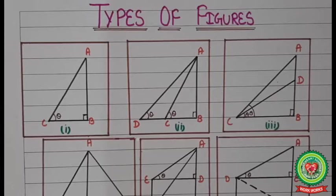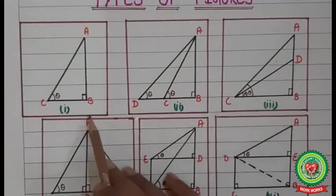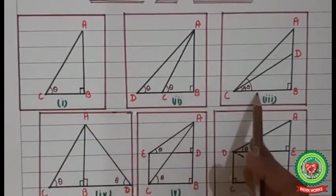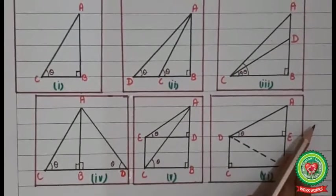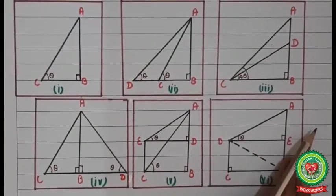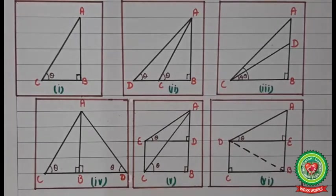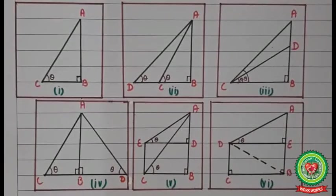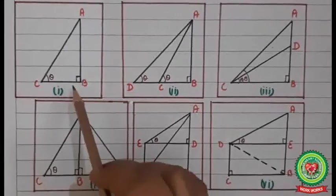In this chapter, we mainly have six types of figures: figure number 1, figure number 2, figure number 3, figure number 4, figure number 5, and figure number 6. It is very important to draw the figure first, then solve the question. When we discuss each question, I will tell you which type of figure it corresponds to. Let's start with question number 1, which is related to figure number 1.